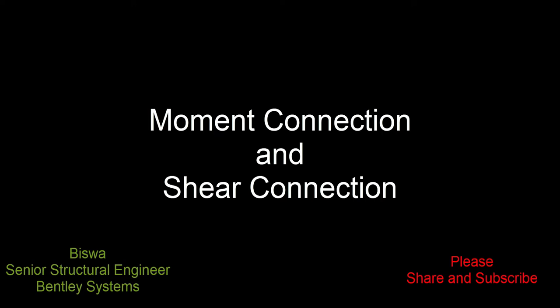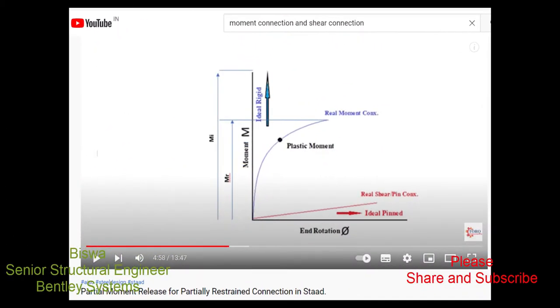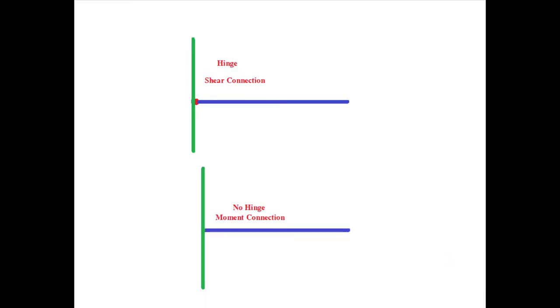Welcome to this session on the discussion of moment connection and shear connection — how they differ from a structural perspective and what is the structural response. The term shear connection is coined by the fact that the connection ideally allows only the shear force to get transferred, whereas the moment connection allows both the moment as well as the shear force. In general, any pin connection is considered a shear connection, and connections where members are joined as a fixed connection are known as moment connections.